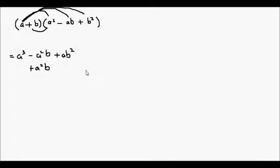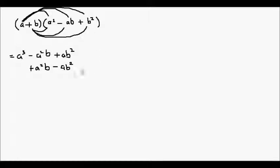I like to keep the variables in alphabetical order. b times negative ab will give me negative ab squared. And b times b squared is going to give me b cubed.